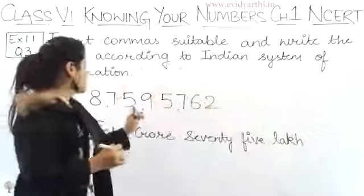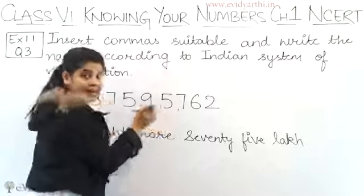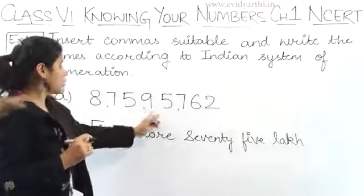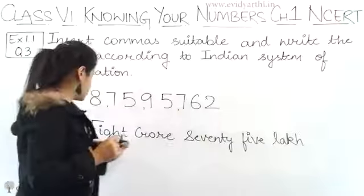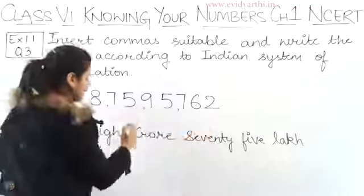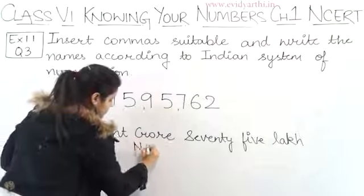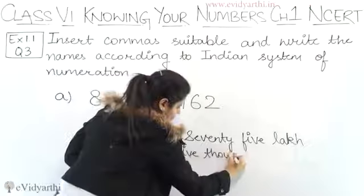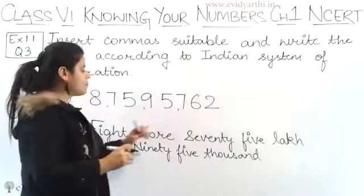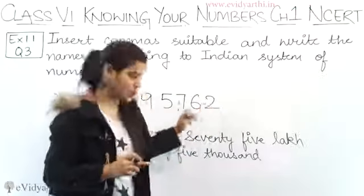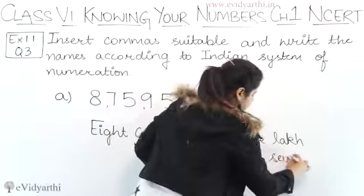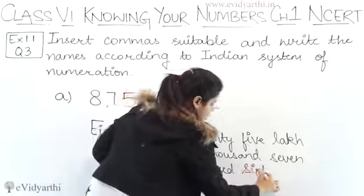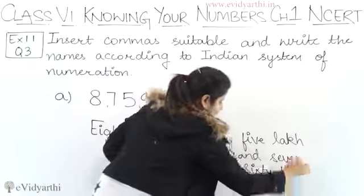Eight crore. After 75, on the next position we have 95. After 95, how many digits are there? One, two, three - three zeros, which comes in thousands. So this becomes 95 thousand. So Part A gives us 8 crore 75 lakh 95 thousand 762.